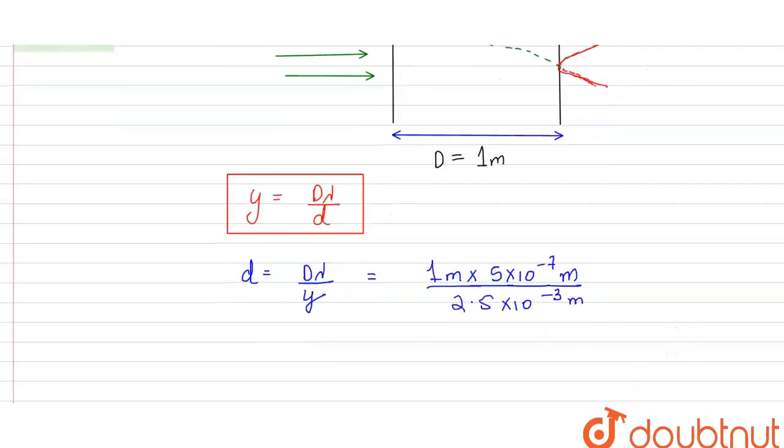On solving, we get d equals 0.2×10⁻³ meters, or we can say that it is 0.2 mm.